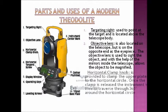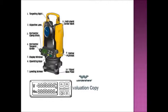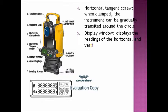The horizontal clamp knob. It is provided to clamp the upper plate to the horizontal circle. Once the clamp is released, the instrument is free to traverse through 360 degrees around the horizontal circle. Here we have the horizontal tangent screw. When clamped, the instrument can be gradually transited around the circle.